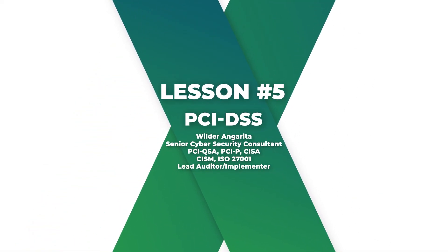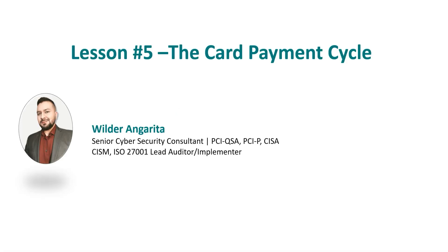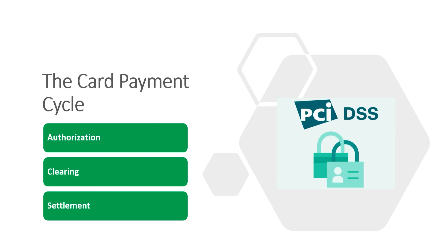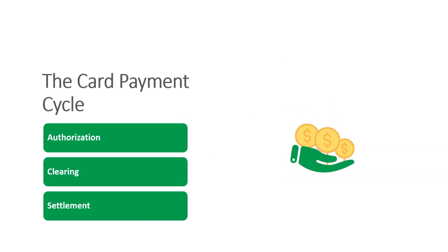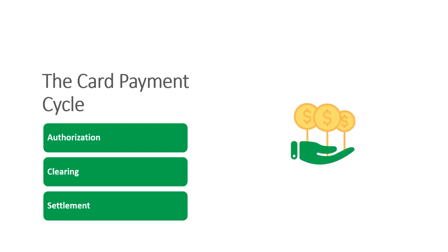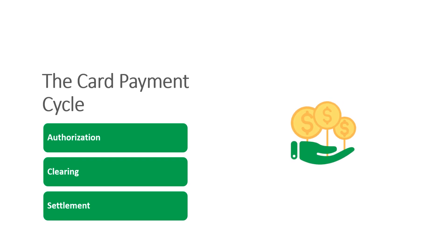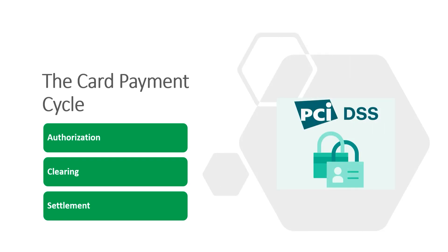Welcome to lesson number five: the card payment cycle. In this lesson we are going to talk about the different steps that take place whenever you pay for goods or services. There are three different steps for the completion of a transaction: first we have authorization, second we have clearing, and third we have settlement.